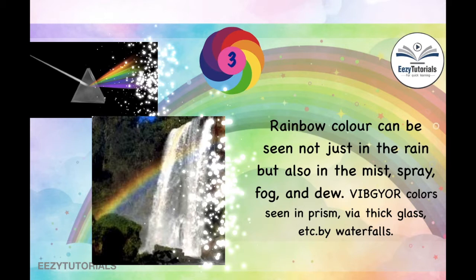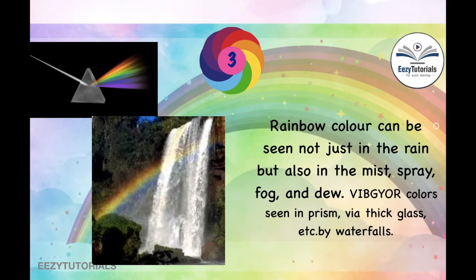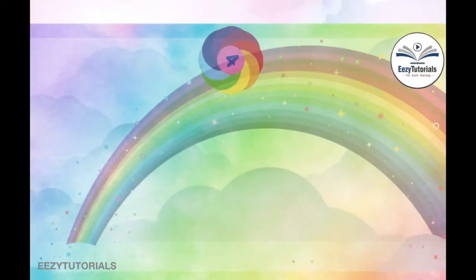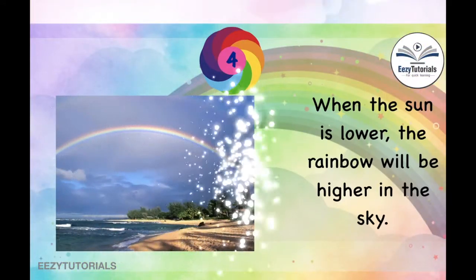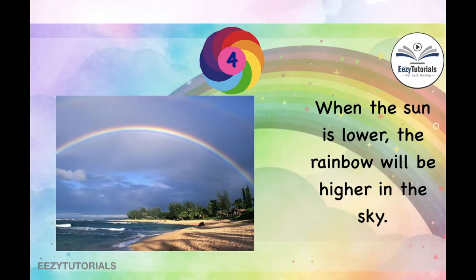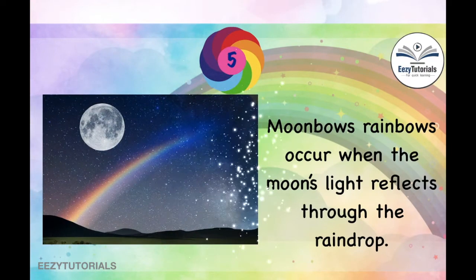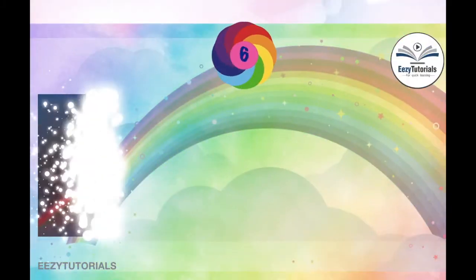In objects like prisms, thick glasses, and near waterfalls, you can see VIBGYOR colors. The next fact is: when the sun is lower, the rainbow will be seen higher in the sky.